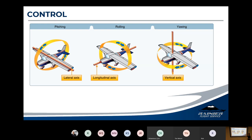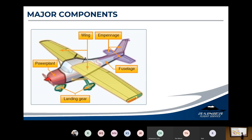Three axes, three levels of control, three rotation points. At the high level, we've got the major components of the airframe. The French actually designed most of what aviation is — it was the Wright Brothers who got the credit for controlling it — so most of these terms are considered French words.